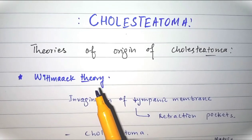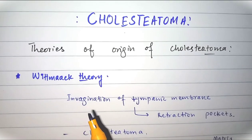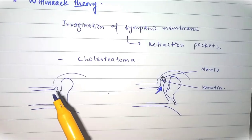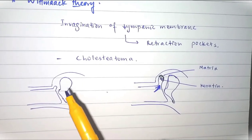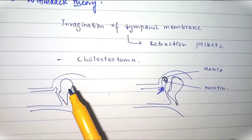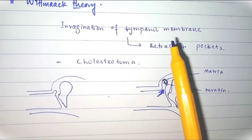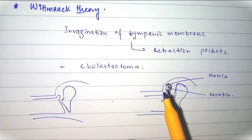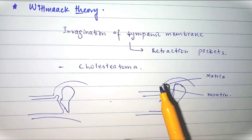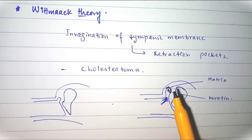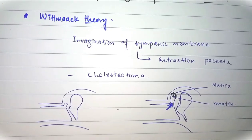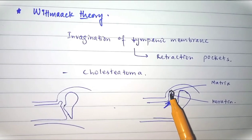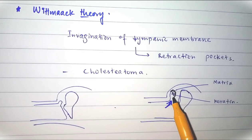Theory number one is Wittmaack's theory. This theory proposes that there is invagination of the tympanic membrane, causing a retraction pocket. As you can see, this is the attic part of the tympanic membrane and the middle ear apparatus. When there is invagination of the tympanic membrane, a retraction pocket forms. The outer surface of the tympanic membrane is lined by stratified squamous epithelium, which upon invagination forms the matrix of the cholesteatoma and lays down keratin — the keratin mass.